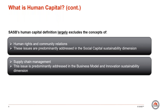Under the human capital definition, human rights and community relations are largely excluded from the definition, and this is covered in its own general issue category under the social capital sustainability dimension. Another topic largely excluded from the definition of human capital is labor conditions in the supply chain, which is covered in the supply chain management general issue category under the business model and innovation sustainability dimension.